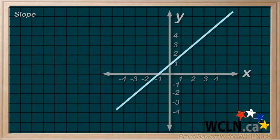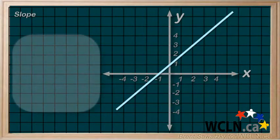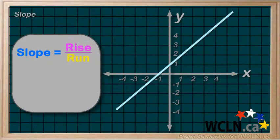Every line has a slope, and the slope of a line tells us how steep that line is. By definition, slope equals rise over run.